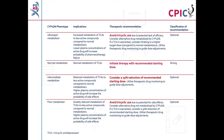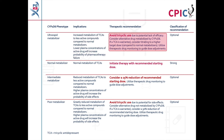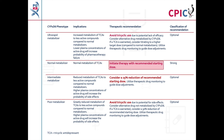These are the CPIC dosing recommendations for desipramine by CYP2D6 phenotype. Patients with a CYP2D6 ultra-rapid metabolizer phenotype will have increased metabolism of TCAs such as desipramine to less active compounds; use of TCAs should be avoided in these patients. If use of a TCA is warranted, consider titrating to a higher target dose than for normal metabolizers — this is an optional recommendation. Patients with a CYP2D6 normal metabolizer phenotype will have normal metabolism of TCAs and can begin desipramine therapy with the recommended starting dose; this is a strong recommendation.